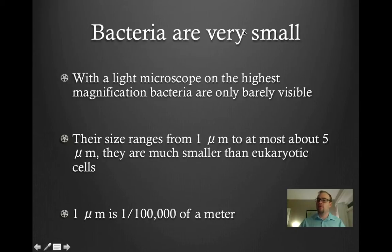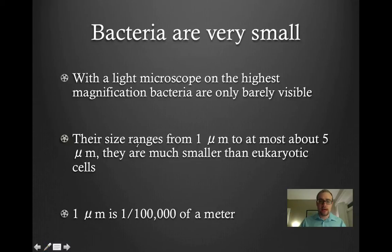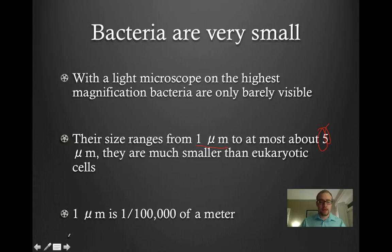Bacteria are very small. With a light microscope, even on the highest magnification, bacteria are only barely visible. Their size ranges from about 1 micrometer — also called 1 micron — to at most about 5 micrometers in diameter. These are very, very small cells, much smaller than a eukaryotic plant or animal cell. Just as a frame of reference, 1 micrometer is equal to about a 100,000th of a meter — a very small unit of measurement.